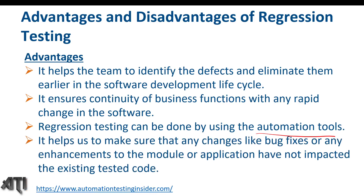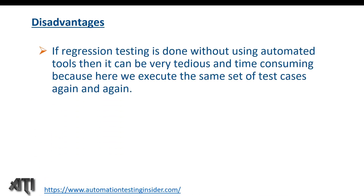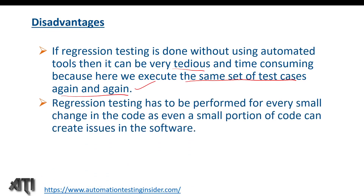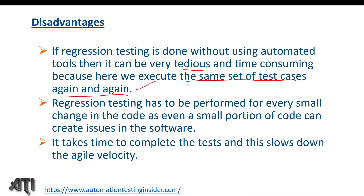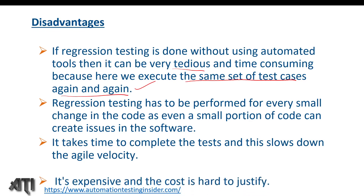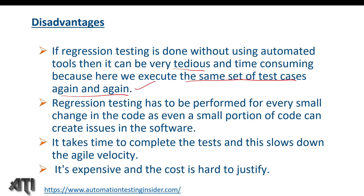Advantages of regression testing: it helps the team identify and eliminate defects earlier in the software development lifecycle; it ensures continuity of business functions; it can be done using automation tools with any rapid change in software; and it ensures that bug fixes or enhancements have not impacted the existing tested code. Disadvantages: without automation tools, regression testing can be very tedious and time-consuming since we re-execute the same test cases again and again after every deployment; it must be performed for every small code change since even a small change can create software issues; it takes time and slows down agile velocity; and it is expensive with costs that are hard to justify.